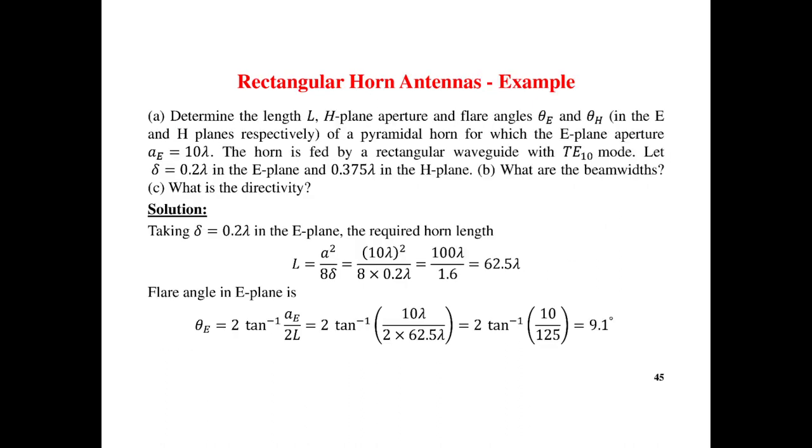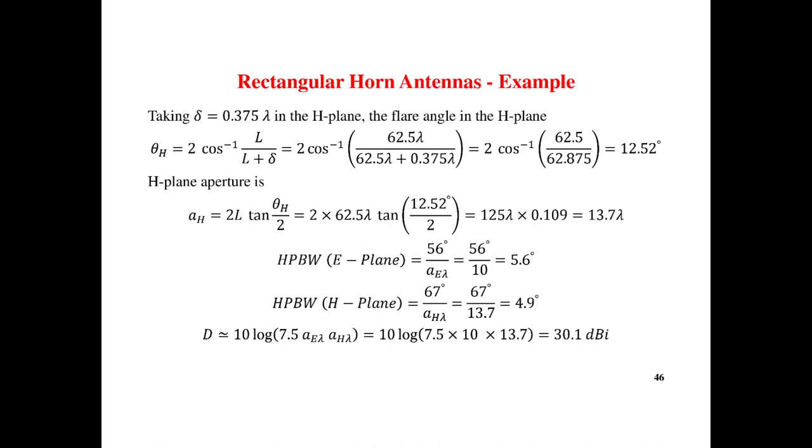Design example: Determine the length L, H-plane and flare angles theta E and theta H of the pyramidal horn antenna. The horn is fed by rectangular waveguide TE10 mode. Let delta E be 0.5 lambda. What are the beam width and directivity? So, you know the formula for length A squared by 8 delta, so you will get 10.2 divided by 8 times 0.21 equals 62.54. Theta E equals 2 tan inverse AE by 2L. Substitute the value, you will get the remaining values. And you have to find out the value of theta H, AH, half-power beam width and directivity.